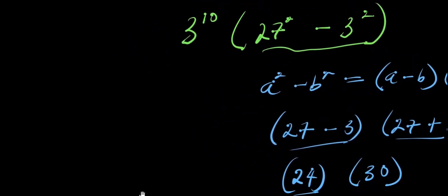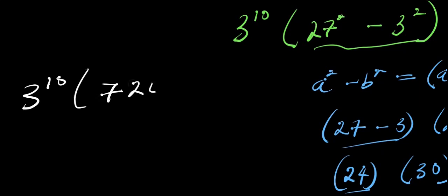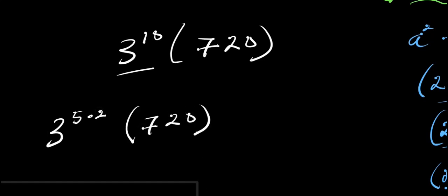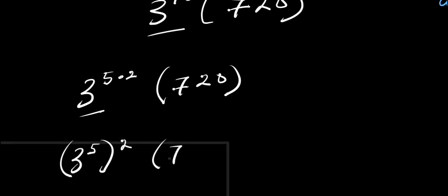That means we are simply going to have 3 to the power of 10 times 720. We can express 3 to the power of 10 as 3 to the power of 5, squared, and this is times 720. So we can write this as 3 to the power of 5, squared, times 720.